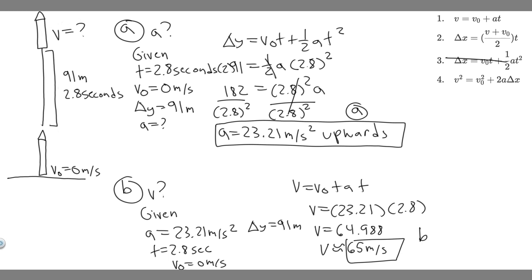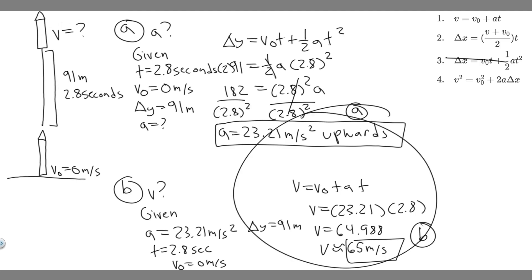So to summarize: the answer to Part B is 65 meters per second, and the answer to Part A was 23.21 meters per second squared, upward. Hopefully you found this useful.